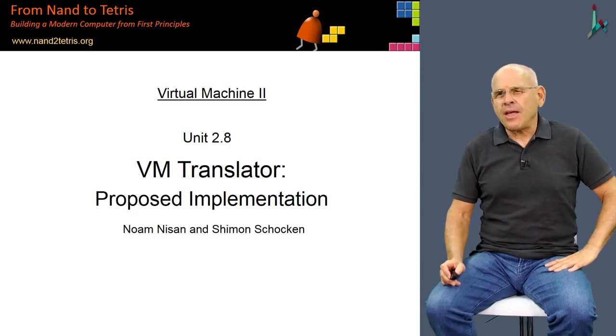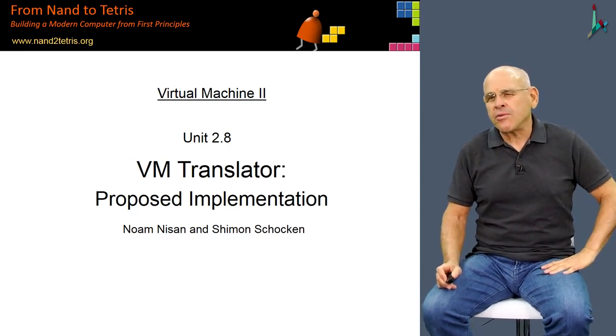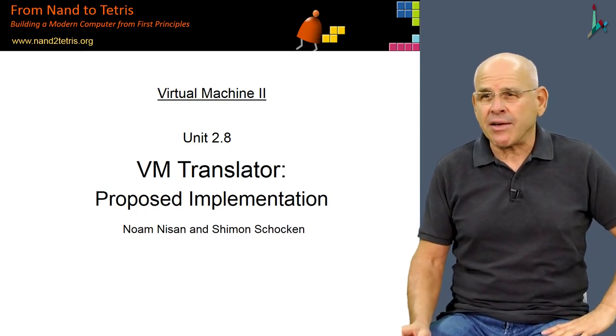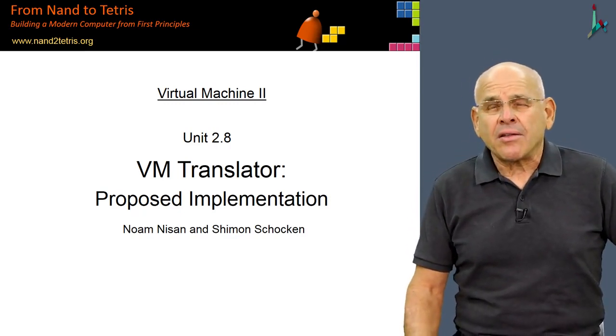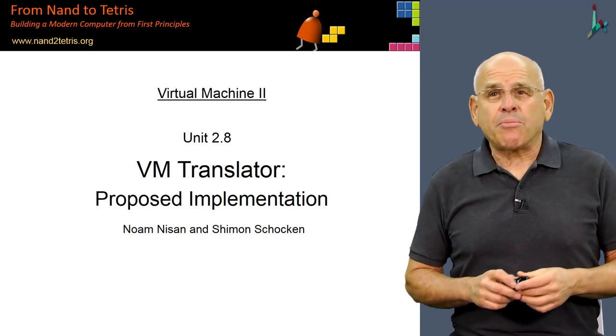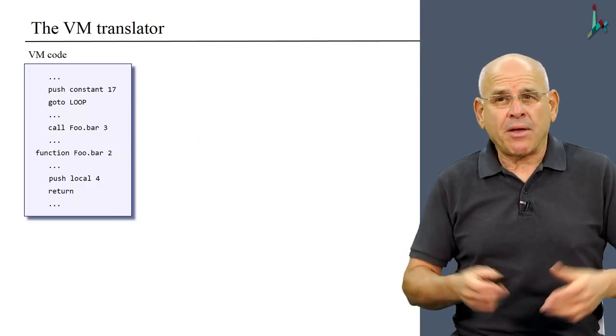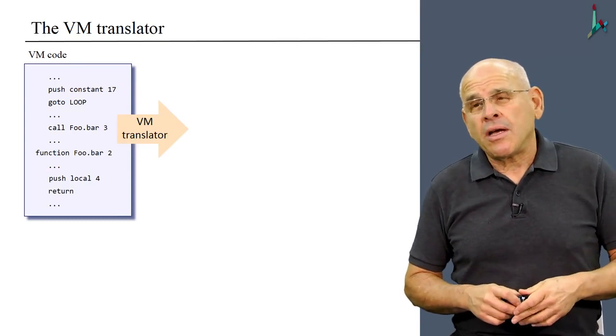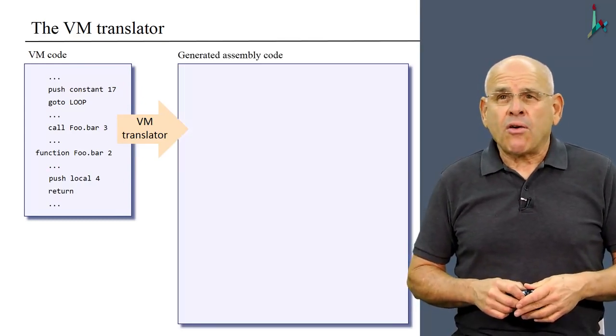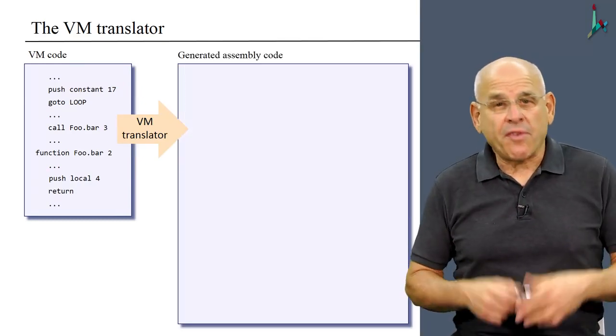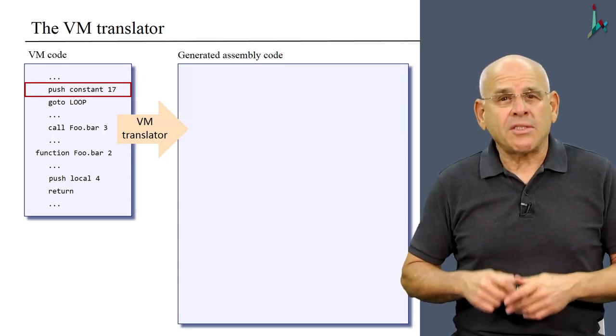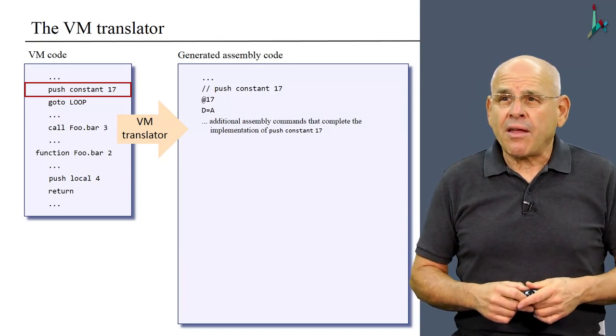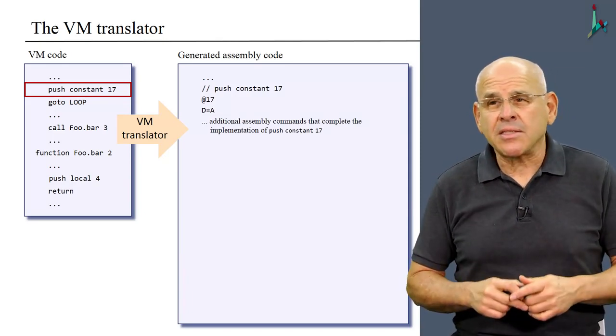So in this unit, we are going to propose an implementation for your VM translator. And to remind you, the VM translator is a program that starts with some VM code and simply translates it into assembly code. And so it goes through the first command, let's say push constant 17, and it generates code that affects the same semantics in assembly.